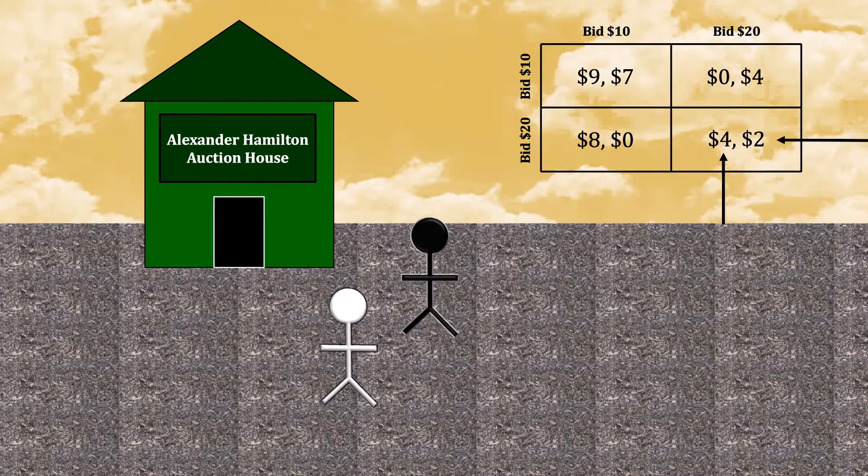This outcome is worse for both of you than both of you bidding $10, but that does not change the fact that both of you bidding $20 is self-reinforcing, and thus it's a reasonable expectation.